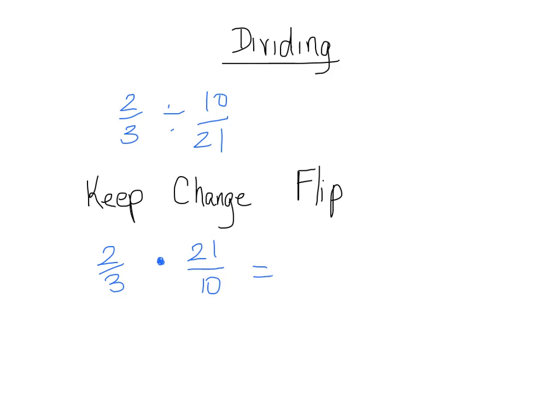Now we can go ahead and cross-simplify because these numbers are kind of large, so it would be easier to cross-simplify first. Dividing the numerator here by 2 because it's common to both the 2 and the 10. And dividing the denominator here by 3 because it's common to both the 3 and the 21. And we get 1 over 1 times 7 over 5. And we didn't actually even have to write that 1 over 1 because 1 times 7 is 7, and 1 times 5 is 5. So here we have our answer when we've finished the dividing.